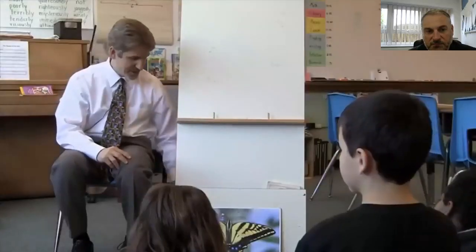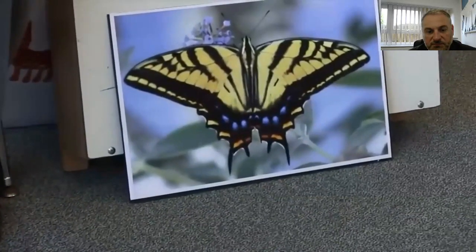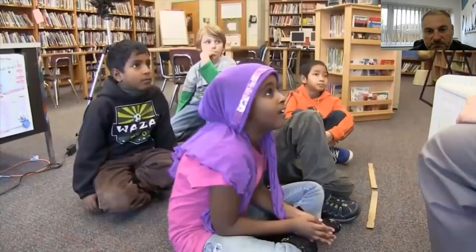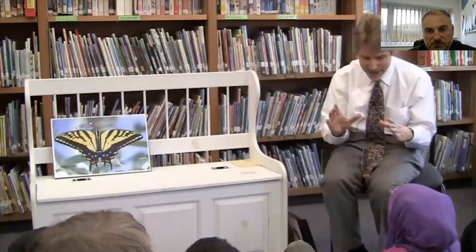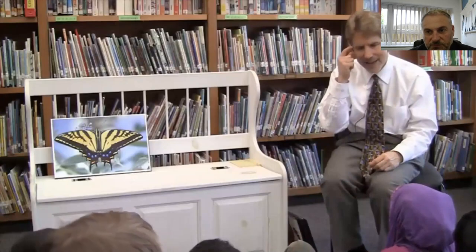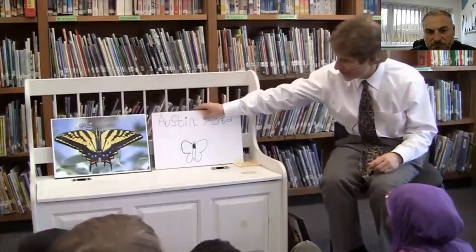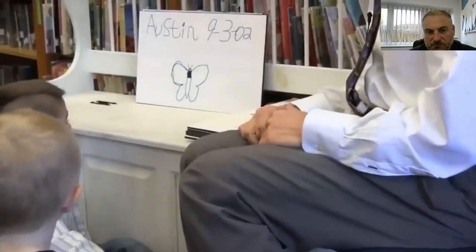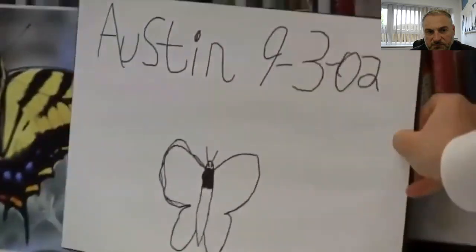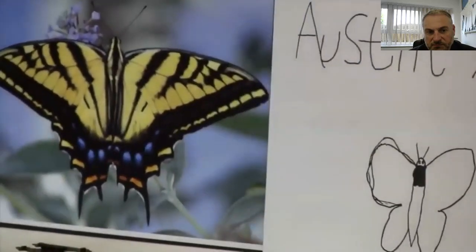Austin's job was to do a scientific drawing of the butterfly. But he was only in first grade, and he forgot to look like a scientist carefully. He got his paper and just started to draw the image of a butterfly he had in his head. And so this is what he drew — it's not bad and it is a butterfly, but it doesn't look exactly like the photograph yet.